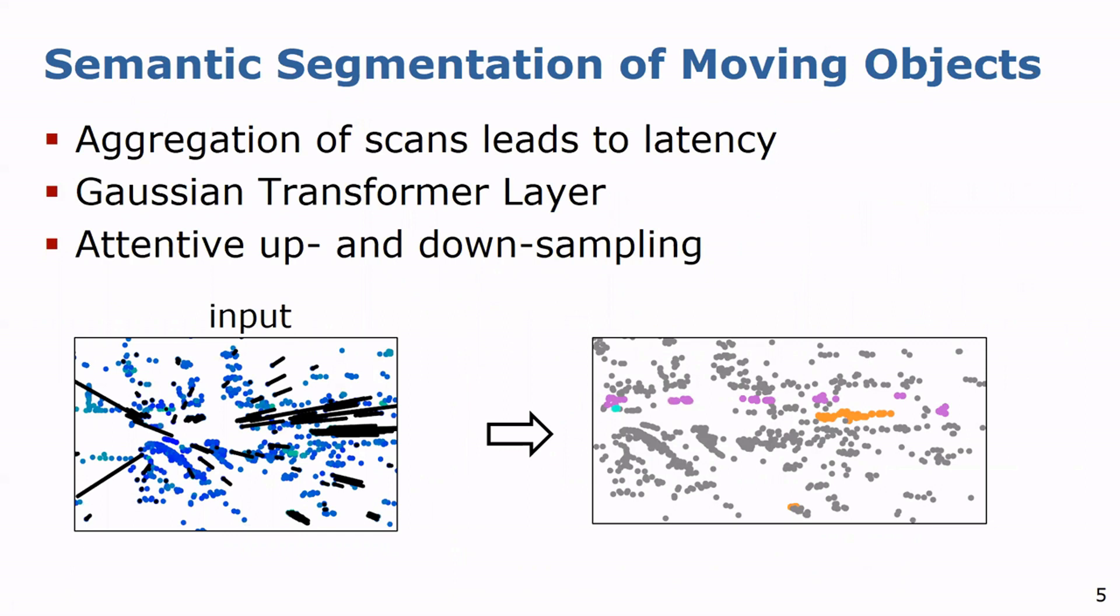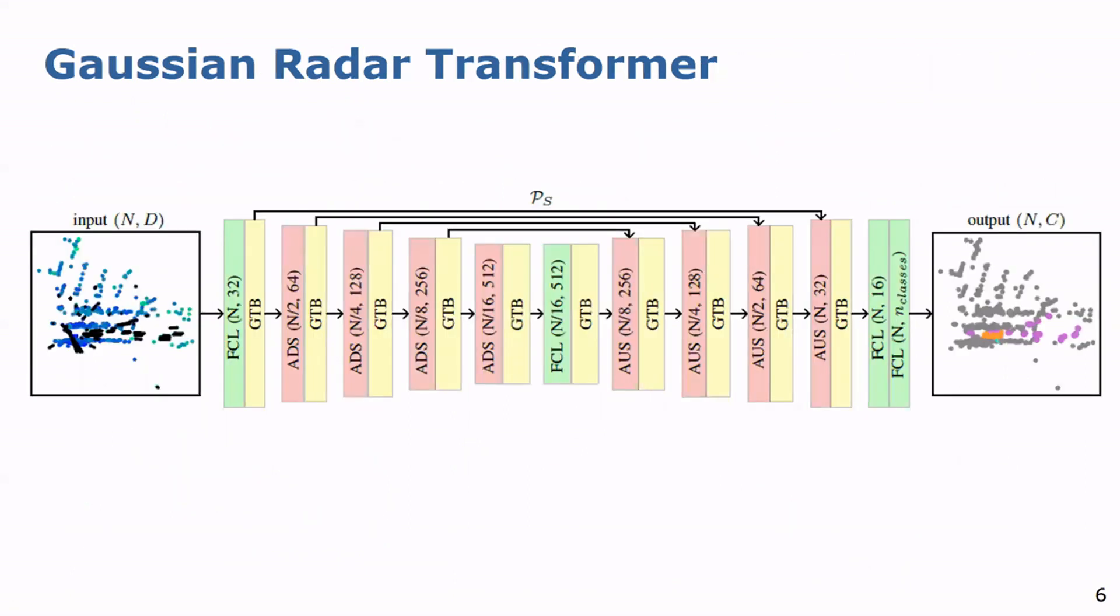These modules are integrated into our overall architecture of our Gaussian radar transformer, which follows a U-net shape with skip connections to process single-scan radar data. The input includes the X and Y coordinates, Doppler velocities, and RCS values, and we predict the semantics of the moving objects.